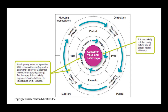Marketing strategy involves two key questions: Which customers will we serve — through segmentation and targeting — and how will we create value for them through differentiation and positioning? Then the company has to design a marketing program using the four Ps: product, place, promotion, and price. All of this is intended to deliver value to our target customers. At the core, marketing is all about creating customer value and profitable customer relations.